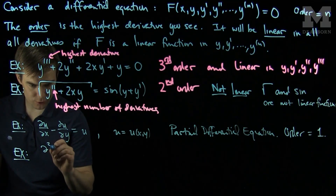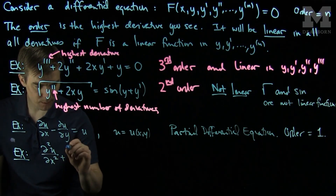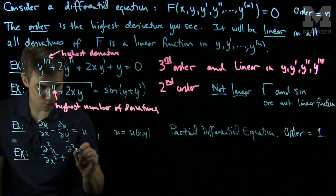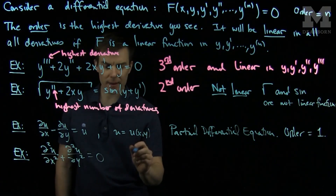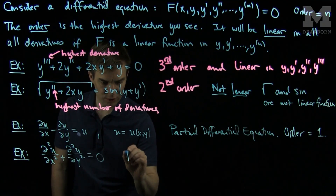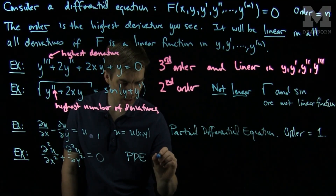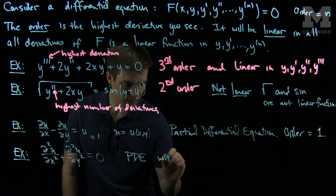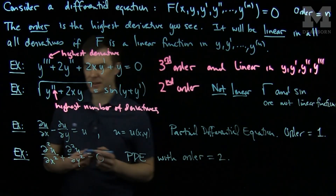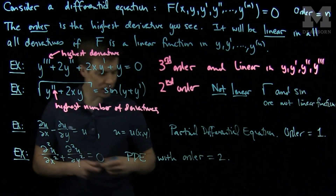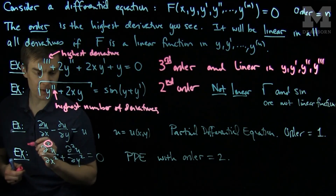If we had the expression: partial squared u partial x squared plus partial squared u partial y squared equals zero, this would also be a partial differential equation, or PDE. And the order of this PDE is 2, since the highest number of partial derivatives we see in this problem is 2.